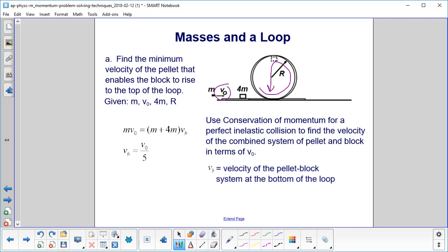So we'll start by using conservation of momentum for a perfect inelastic collision to find the velocity of the combined system of the pellet and the block. And what do we have? We have mv0 is equal to (m + 4m) times vb. That's the combined mass.